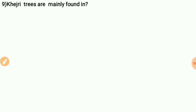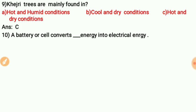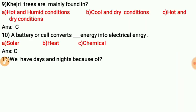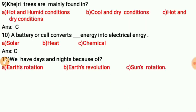Question ten: A battery or cell converts what energy into electrical energy? The correct answer is C — a battery or cell converts chemical energy into electrical energy. We have days and nights because of Earth's rotation.